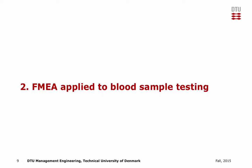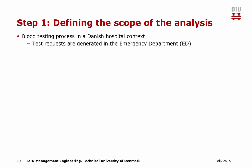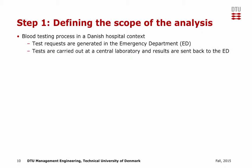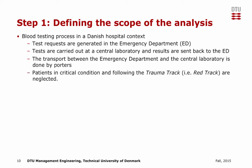A practical application of the FMEA tool in the healthcare sector will now be presented. We will take the blood testing process as a base case. The first step is to define the scope of the FMEA analysis. The blood testing process occurs in the context of the Danish healthcare system. Test requests are generated in the emergency department, carried out at a central laboratory, and then the results are sent back to the emergency department. Transport between the emergency department and the central laboratory is done by porters. High priority patients fall out of the scope of this analysis.